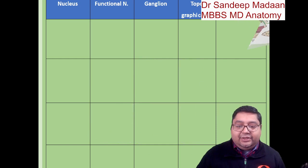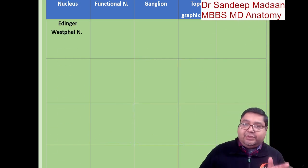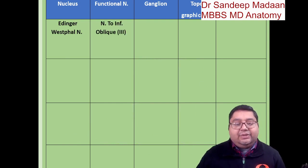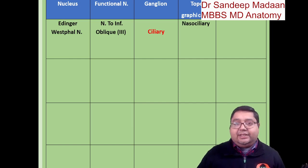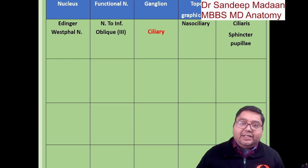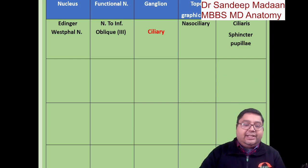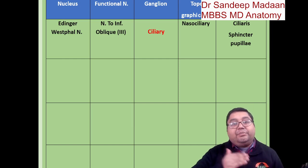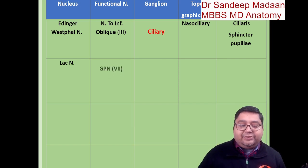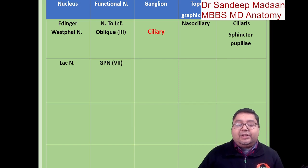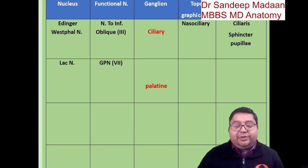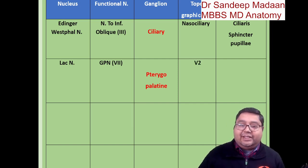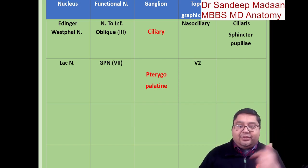To summarize, starting from the nucleus to the target tissue: from the Edinger-Westphal nucleus, the nerve to inferior oblique relays in the ciliary ganglion, which is held by the nasociliary nerve as its topographical nerve. The target tissue is the ciliaris muscle and the sphincter pupillae. For the lacrimal pathway, the lacrimal nucleus sends fibers along the greater petrosal nerve — a branch of the seventh nerve — to the pterygopalatine ganglion, held by the maxillary nerve.